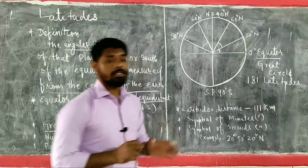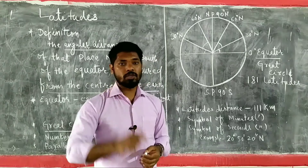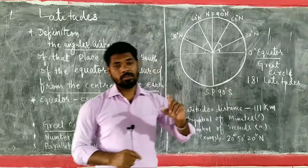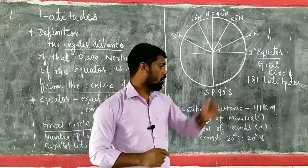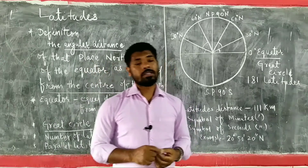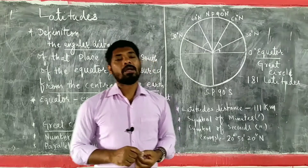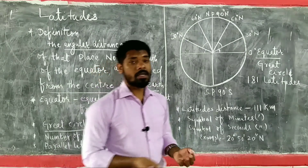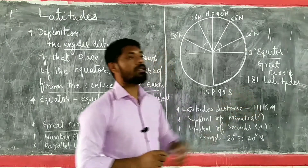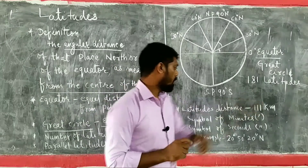The distance between each latitude — from one degree to the next — is 111 kilometers. This is because the circumference of the earth is 40,000 kilometers, and dividing 40,000 by 360 degrees gives approximately 111 kilometers. That is why each latitude is spaced 111 kilometers apart.